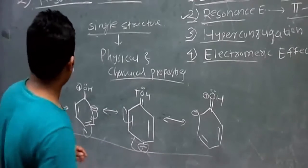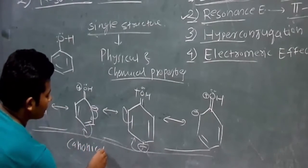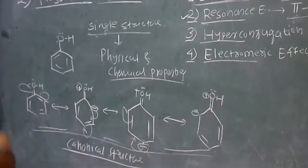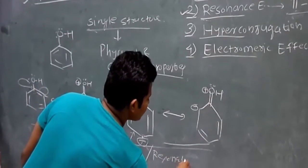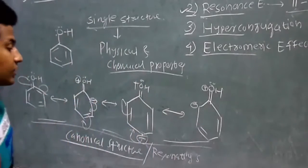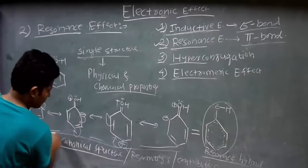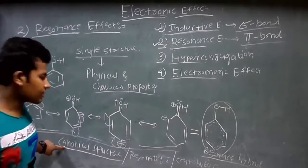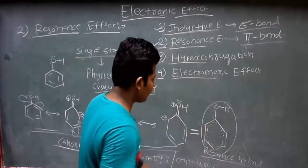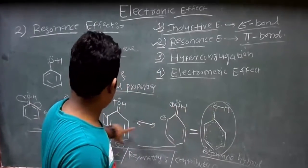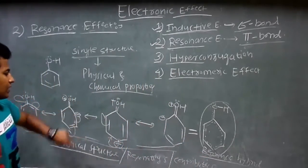These two or more structures — since a single structure cannot explain the physical and chemical properties, we require two or more structures to explain these properties. All these structures are called canonical structures. They are also called resonating structures, and also called contributing structures. These two or three canonical structures for phenol all contribute to one single structure. That structure which describes all resonance is called the resonance hybrid, while these three structures are called canonical structures or resonating structures or contributing structures.